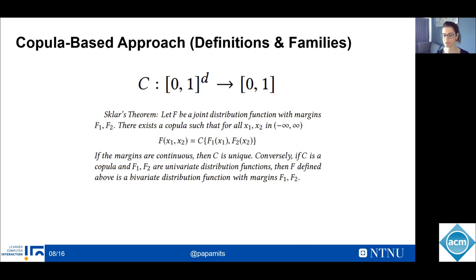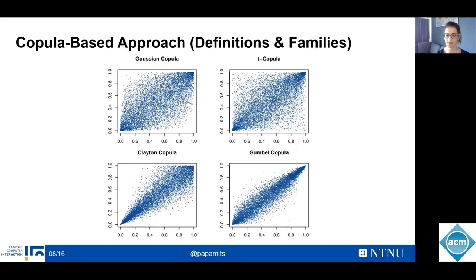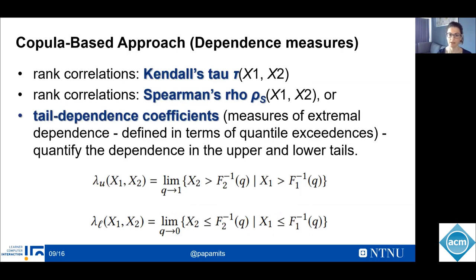Here we consider only response time and knowledge mastery and thus we restrict ourselves to the bivariate case. Most copulas are parametric and there are basically two types: the copulas of normal mixture distributions and the Archimedean copulas. The first type refers to the elliptical copulas such as the Gaussian and the Student's T copula, and the second type refers to copulas that have simple closed forms such as Gumbel and Clayton copula. If the joint distribution is well represented by an elliptical distribution, such as Gaussian or T, then the dependent structure is linear.